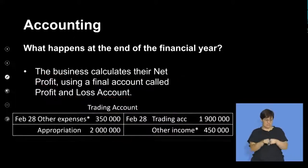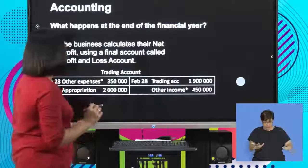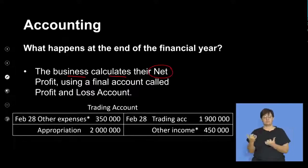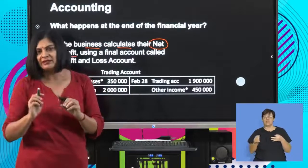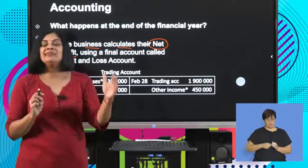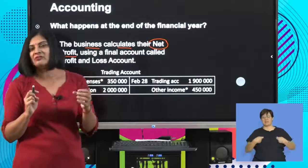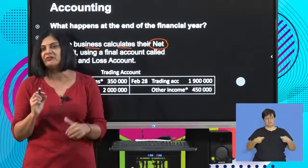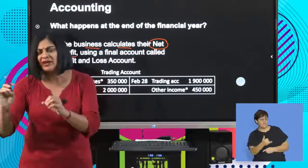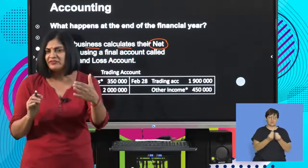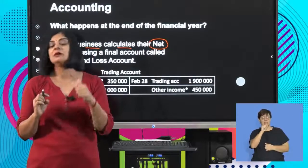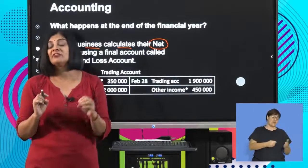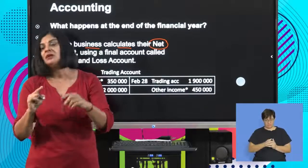Once you've calculated gross profit, the business then calculates net profit. This is where I'm now taking other income — such as rent income, commission income, interest income — and adding this to my gross profit, then minus other expenses. When I say other expenses, I'm referring to all your operating expenses: salary, wages, telephone, water and electricity, depreciation, trading stock deficit, and so on. Gross profit plus other income minus other expenses gives you your net profit — your final profit for the year after subtracting all expenses.